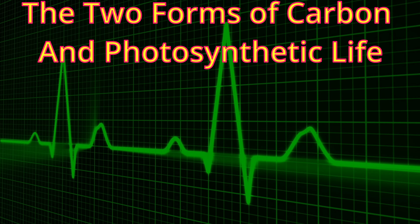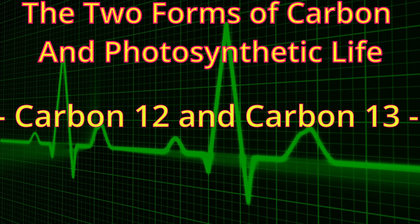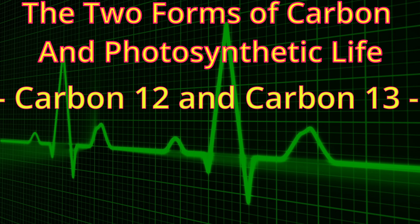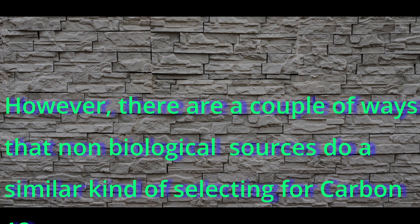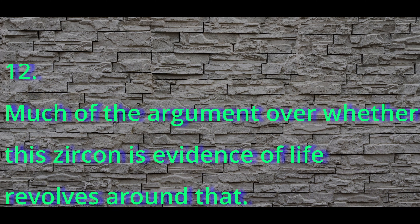Instead, what we're looking for is a special distribution of the different carbon isotopes. Carbon comes in two stable forms: carbon-12, that's carbon with six protons and six neutrons, and carbon-13, that's carbon with six protons and seven neutrons. Carbon-13 is slightly heavier than carbon-12 and is selected against in photosynthetic creatures, such as many microbes. The natural distribution of carbon-12 to carbon-13 here at Earth's crust is 99 carbon-12 to 1 carbon-13, but that ratio is slightly skewed in a lot of life forms — specifically, about 2% less carbon-13 than normal in photosynthetic life forms. This difference is maintained once the organism dies. This irregular distribution was found in this zircon from 4.1 billion years ago. However, there are known ways that non-biological sources do a similar kind of selecting for carbon-12, and much of the argument revolves around just how strong of an evidence for life is carbon-12 in this specific zircon.